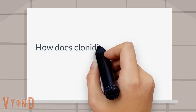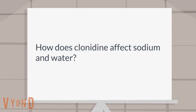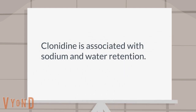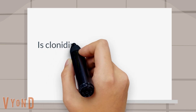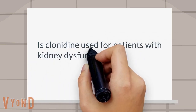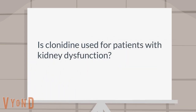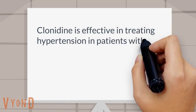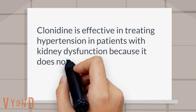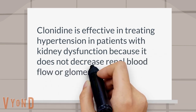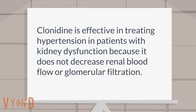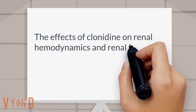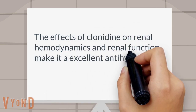How does clonidine affect sodium and water? Clonidine is associated with sodium and water retention. Is clonidine used for patients with kidney dysfunction? Clonidine is effective in treating hypertension in patients with kidney dysfunction because it does not decrease renal blood flow or glomerular filtration. The effects of clonidine on renal hemodynamics and renal function make it an excellent antihypertensive agent.